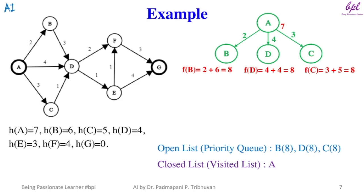Node A has three successors: node B, node D, and node C. In the same way we calculated f(A), we will calculate f(B), f(D), and f(C). f(B) = 2 + 6 = 8, f(D) = 4 + 4 = 8, and f(C) = 3 + 5 = 8. These nodes will be added to the open list along with their evaluated values.